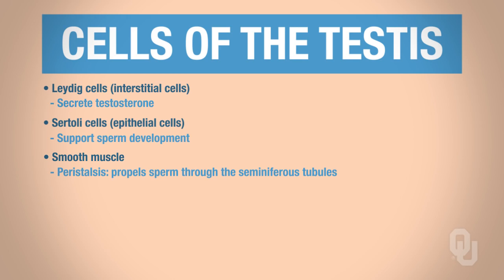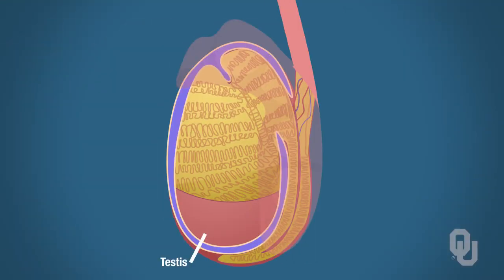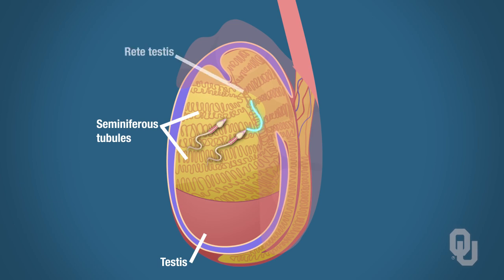The sperm are produced by the Sertoli cells and released into the lumen of the seminiferous tubule. The sperm then travel through a region called the rete testes and into the efferent ductules. This is the point at which the sperm exit the testes.